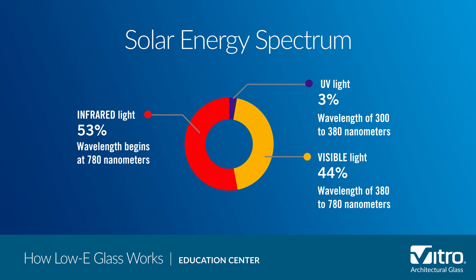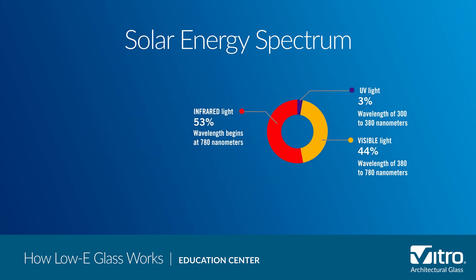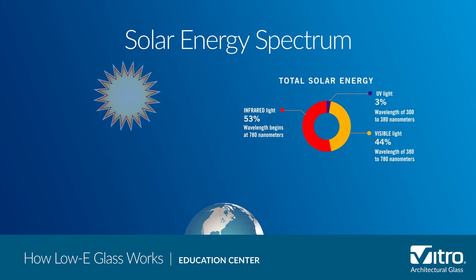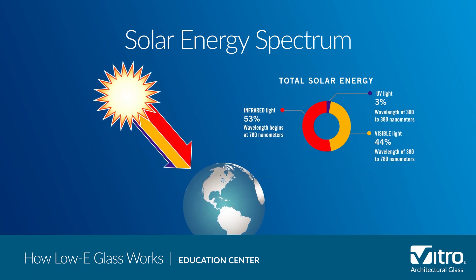Visible light occupies the part of the spectrum between 380 and 780 nanometers. Infrared light, which is transmitted as heat into a building, begins at wavelengths of 780 nanometers. Solar infrared is commonly referred to as shortwave infrared. Heat radiating off of warm objects has longer wavelengths than the sun, and is referred to as long-wave infrared.